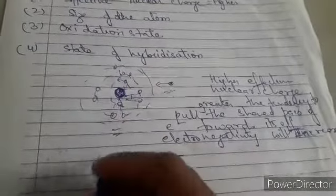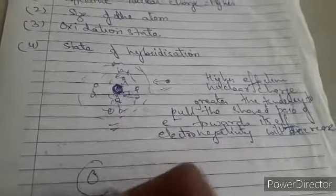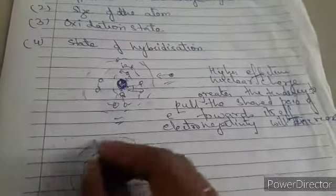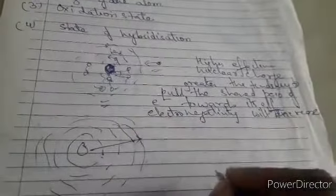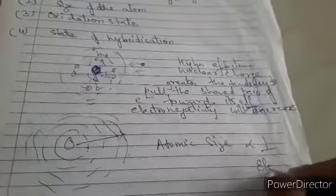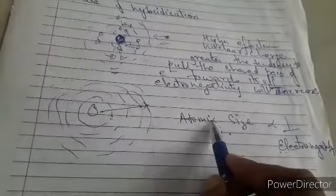The second factor is size of the atom. If the atomic size is large, electronegativity decreases. Atomic size is inversely proportional to electronegativity: if atomic size is more, electronegativity is less; if atomic size is less, electronegativity is more.